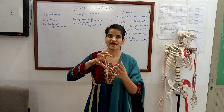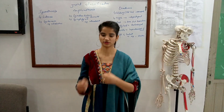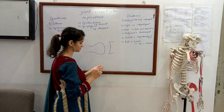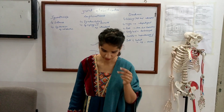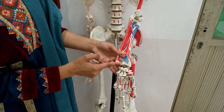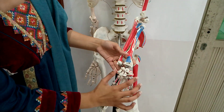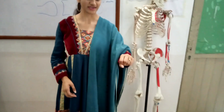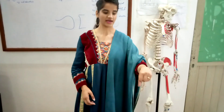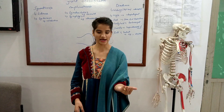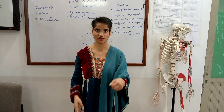In the condyloid joint, there is one ovoid convex surface and opposite to that one concave surface. Its example is the radiocarpal joint. The radius provides a concave surface while all the carpals in combination provide a convex surface. This joint allows flexion, extension, adduction, abduction and circumduction — all these movements are provided through this joint.